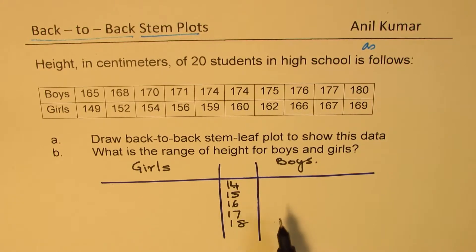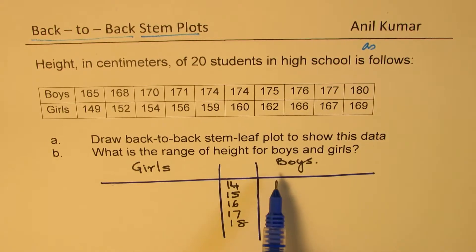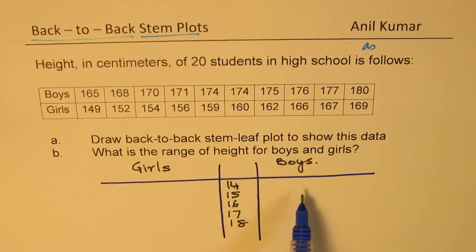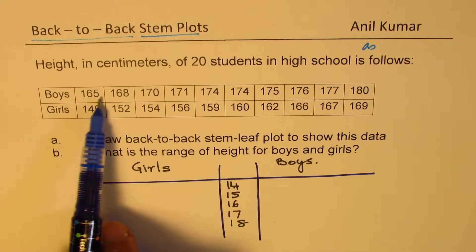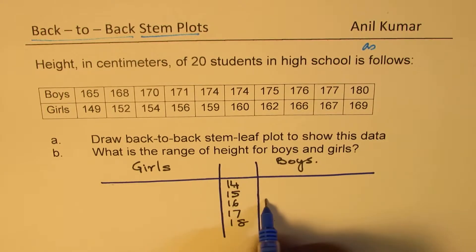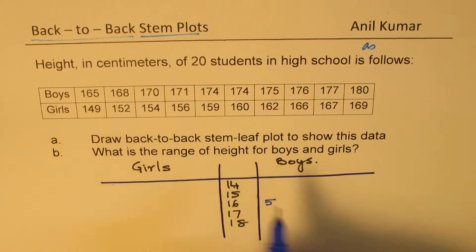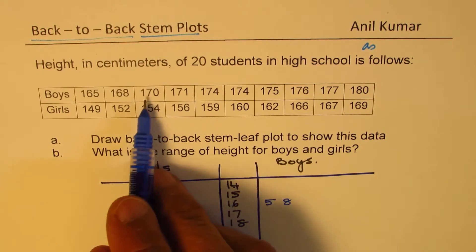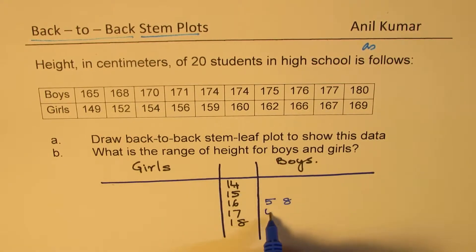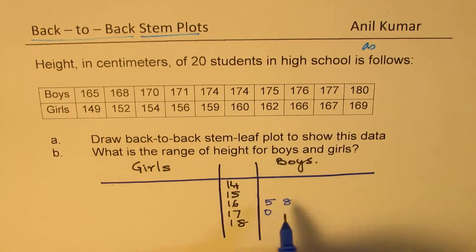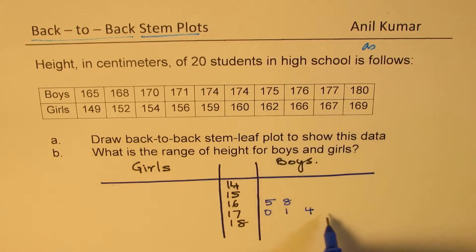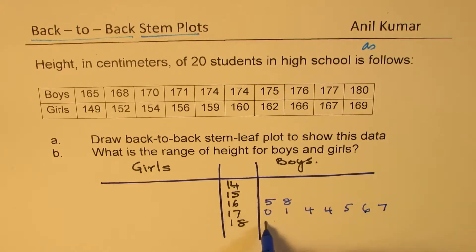These are the heights of students in hundreds — three digits. The last digit will go in the leaf part. So 165 means 16 and then 5. Then 168, so 5 and 8. Then 170, so 1, 7, 0. Then 171, 174, 174, 175, and then 176, 177, and 180.